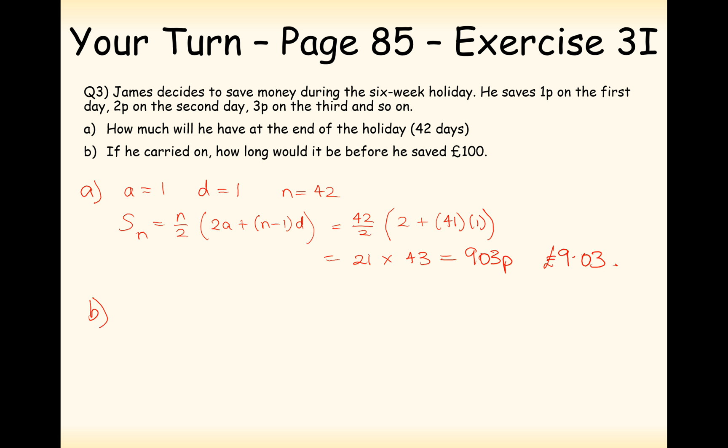If he carried on, how long would it be before he saved 100 pounds? Now remember 100 pounds will be 10,000 pence. So we're going to work with 10,000 as our summation answer. So Sn equals 10,000, which is going to be equal to n over 2 times 2 plus n minus 1 lots of 1. Now we've got an equation to solve. n over 2 times by, expand the brackets, we get n plus 1 equals 10,000. And double both sides, we get 20,000 equals n squared plus n. So we've got to solve n squared plus n minus 20,000.